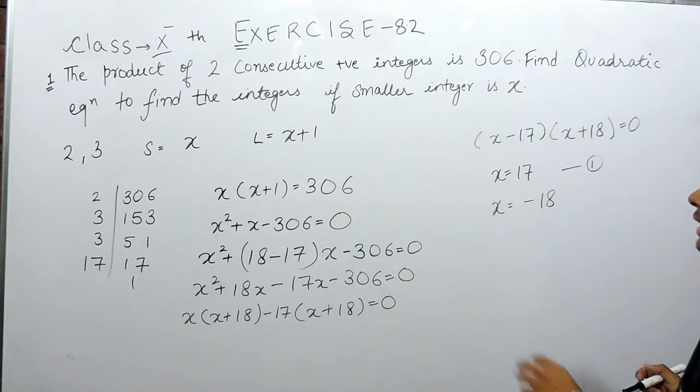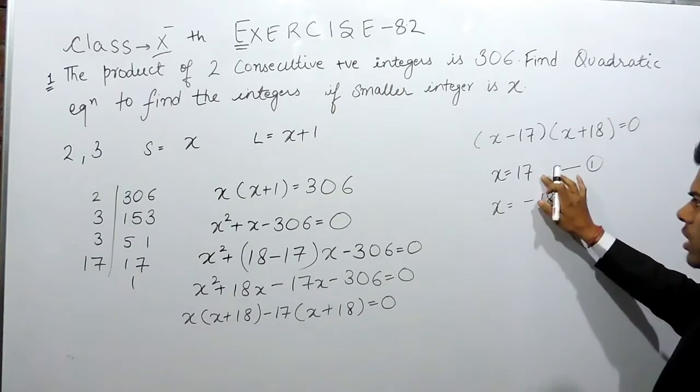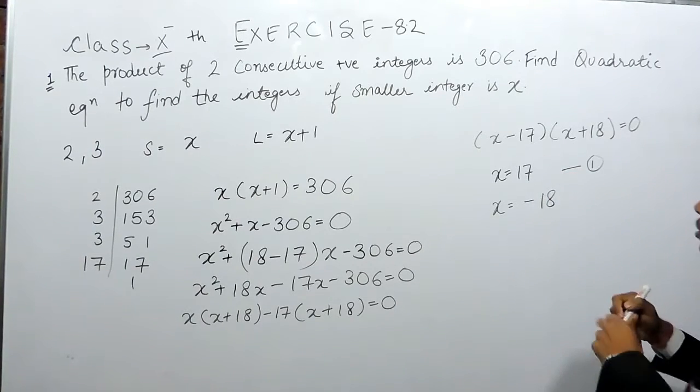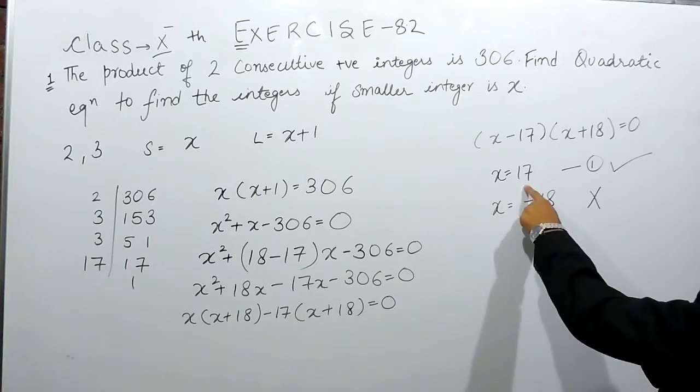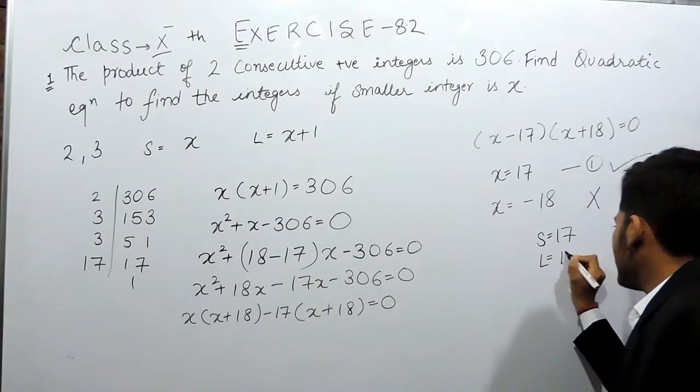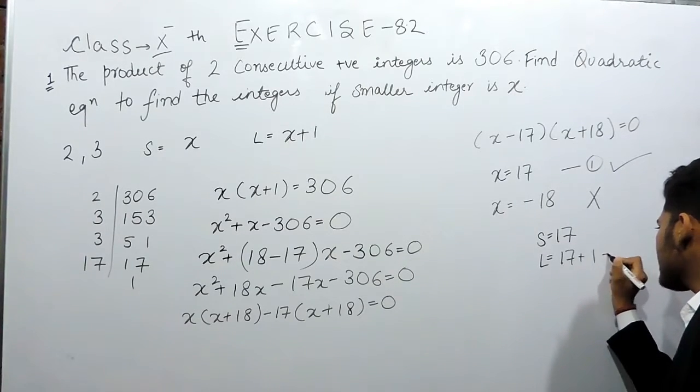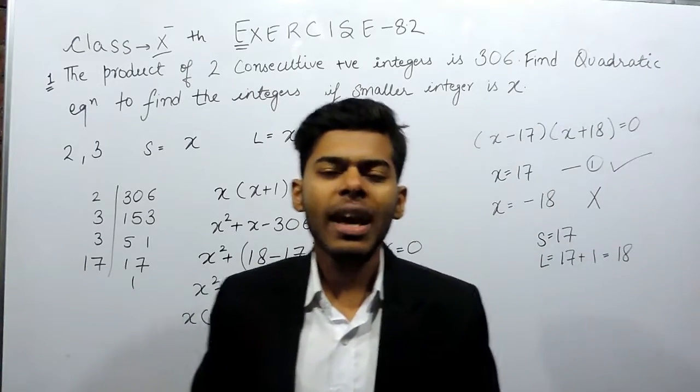Now we were given that these two numbers were positive integers. This is positive but this is negative. So we will exclude this and we will include this value. So the smaller integer is 17 and the larger integer is 17 plus 1, that is 18. This is how you can solve this question. Thank you.